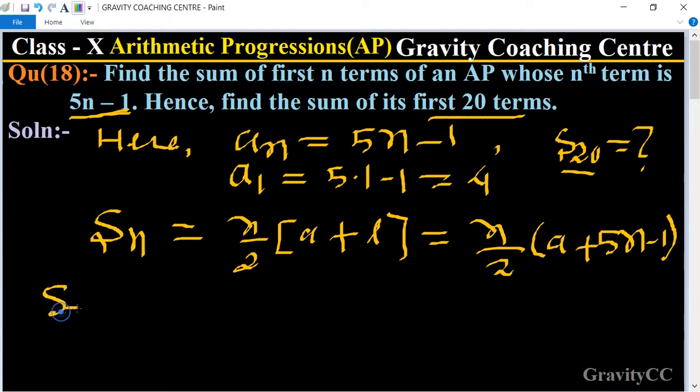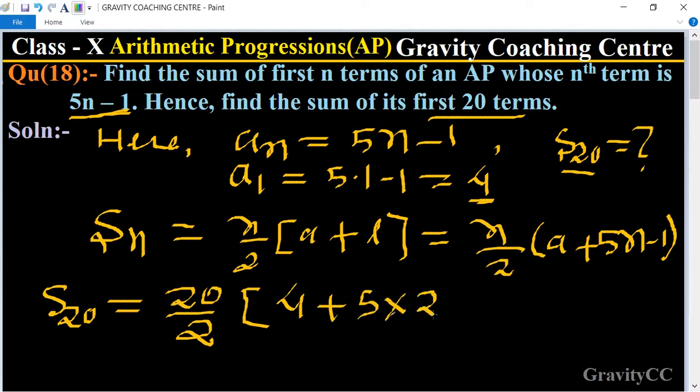S20 equals 20 upon 2 times (4 plus 5 multiplied by 20 minus 1). 20 is cancelled by 2 to get 10, equal to 10 times (4 plus 100 minus 1).